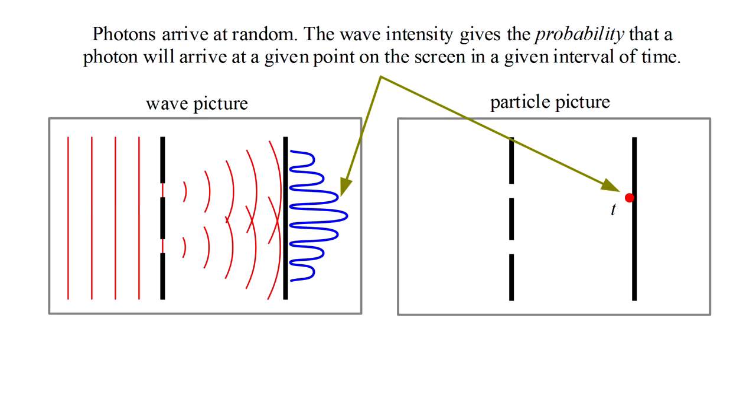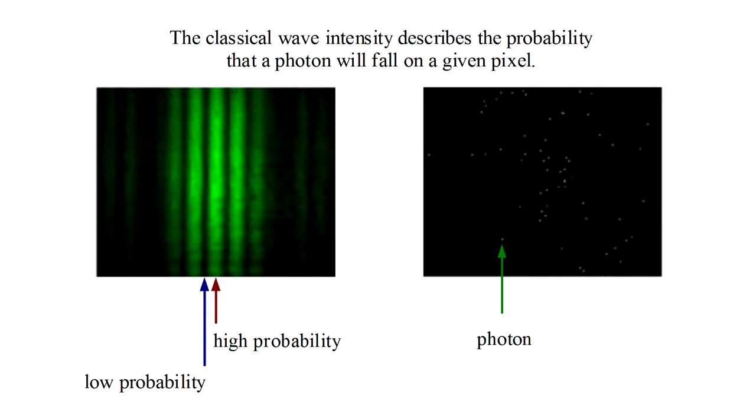The discrete photon concept didn't overthrow the wave theory of light, but rather combined with it to form the counter-intuitive picture of wave-particle duality. Light energy arrives in discrete photons, seemingly at random, but with a probability determined by the classical wave intensity. It's only after a great many discrete photons have arrived that the probability distribution becomes apparent as a continuous wave pattern.